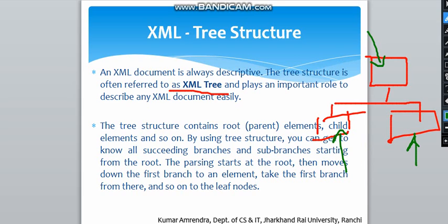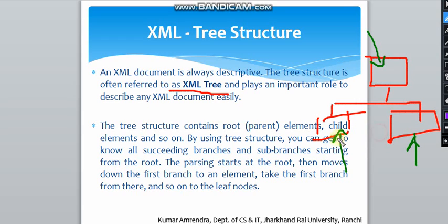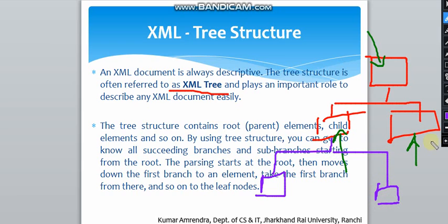Let's look at how this root is executed. These are the branches of the first one, and let's suppose this is one branch of the second one, and here we are also having two branches.